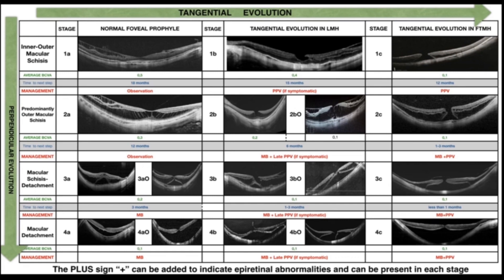As soon as macular detachment occurs, the schisis will disappear. The letter O in the staging system represents the presence of an outer lamellar hole.